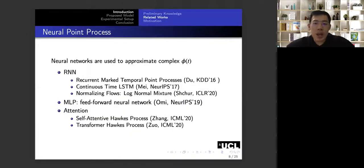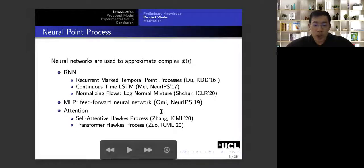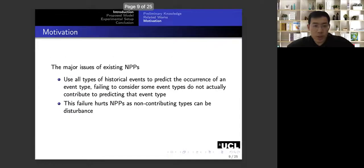And it defines the intensity function according to equation 2, where mu is a base value, and phi is a kernel function. This figure shows a very simple, very vanilla form of this kernel function. And in order to approximate more complex kernel functions, people have been trying to use neural networks, such as recurrent neural networks, multi-layer perceptrons, and the attention mechanism. So there are some typical works in recent years published in top AI conferences.